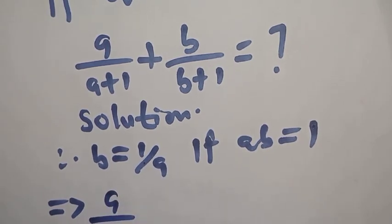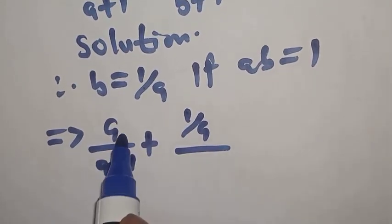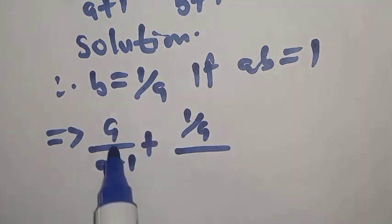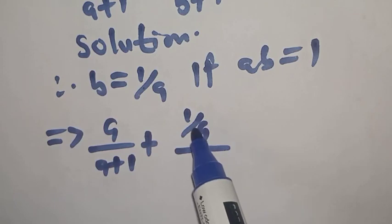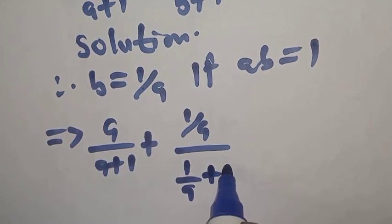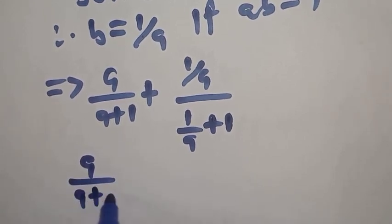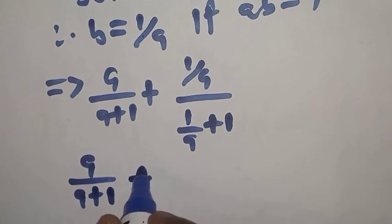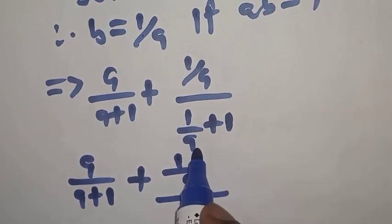We have A over A plus 1, plus B — which is 1 over A — over 1 over A plus 1. This can be expressed as: A over A plus 1 plus 1 over A, all over — let's find the LCM of this. The LCM is A.